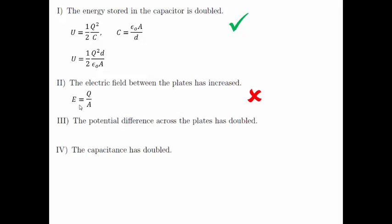For the next statement, the potential difference across the plates has doubled. We know that the potential difference V = ED, where E is the electric field and D is the separation between the parallel plates. Since the electric field remains constant and the separation is doubled, the potential difference across the plates is then doubled. Hence this statement is correct.